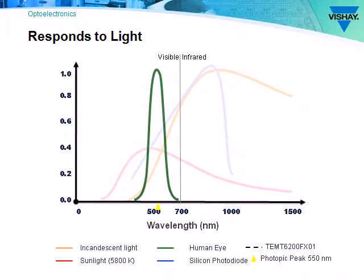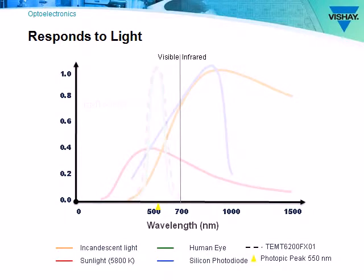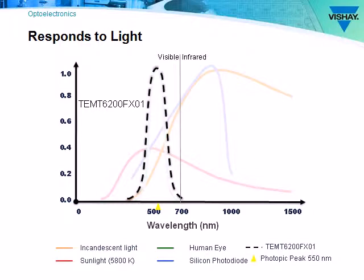Using an ambient light sensor which has the same sensitivity to visible light as our eyes will ensure optimum device performance. For example, the TEMT6200FX01 responds to light just like our eyes.